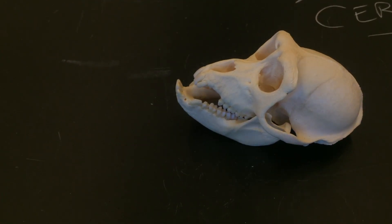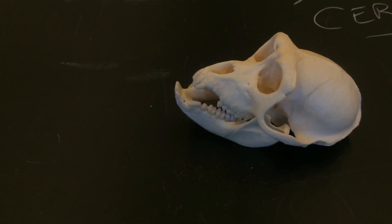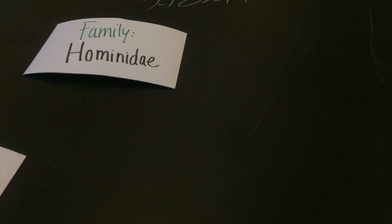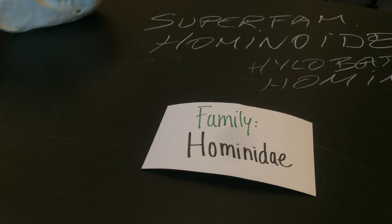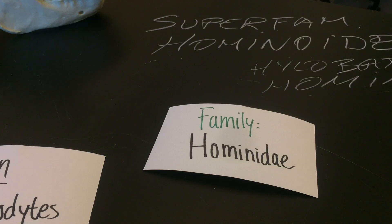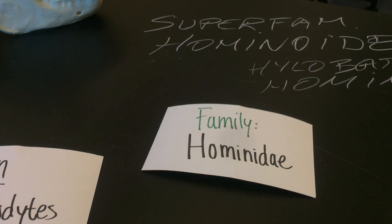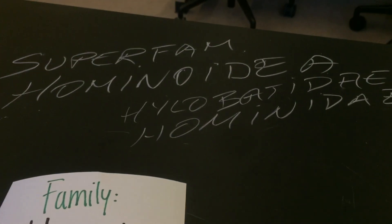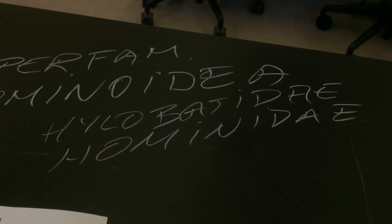The last superfamily we want to look at is Hominoidea. The Hominoidea are also catarrhine — old world. We're only going to deal with one family here, the Hominidae, which includes not just humans but the other great apes as well. The Hominoidea includes two families: the Hominidae and the Hylobatidae.